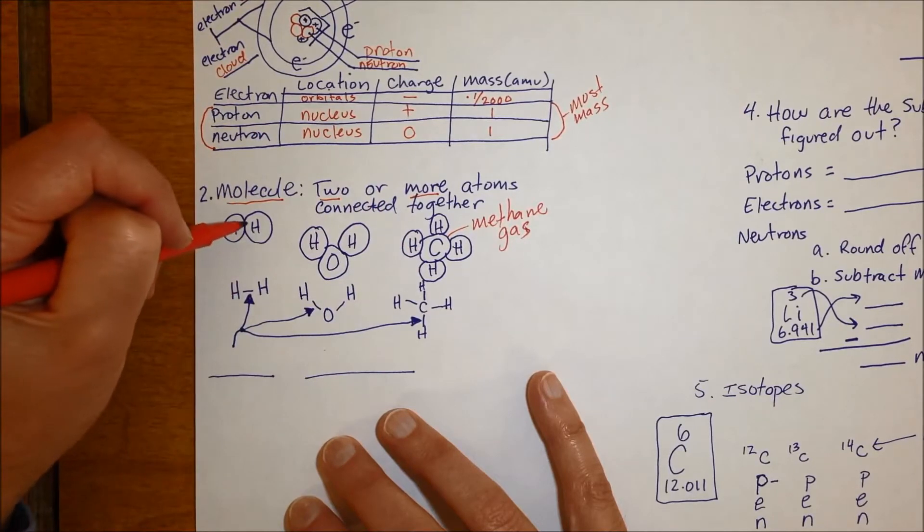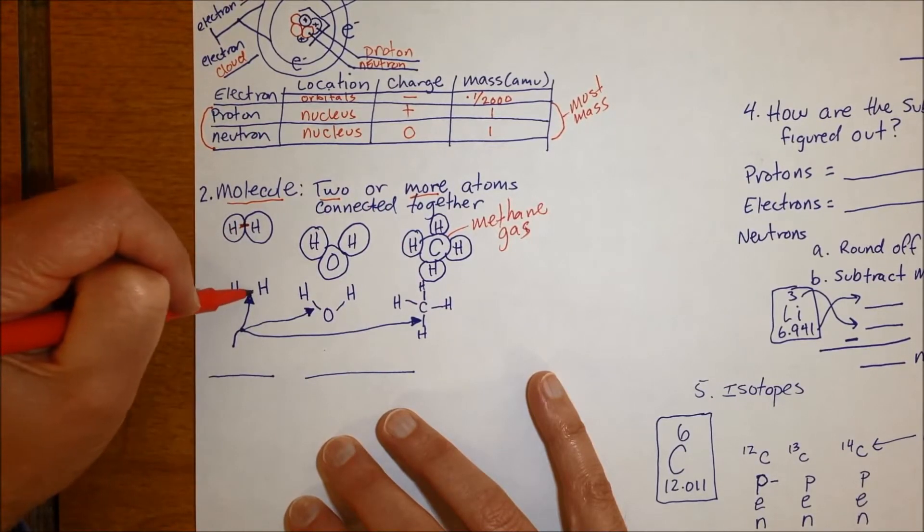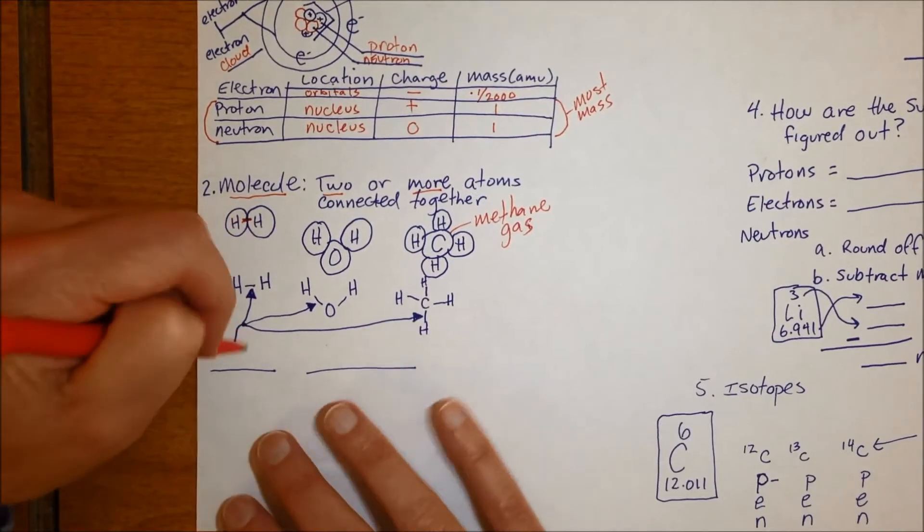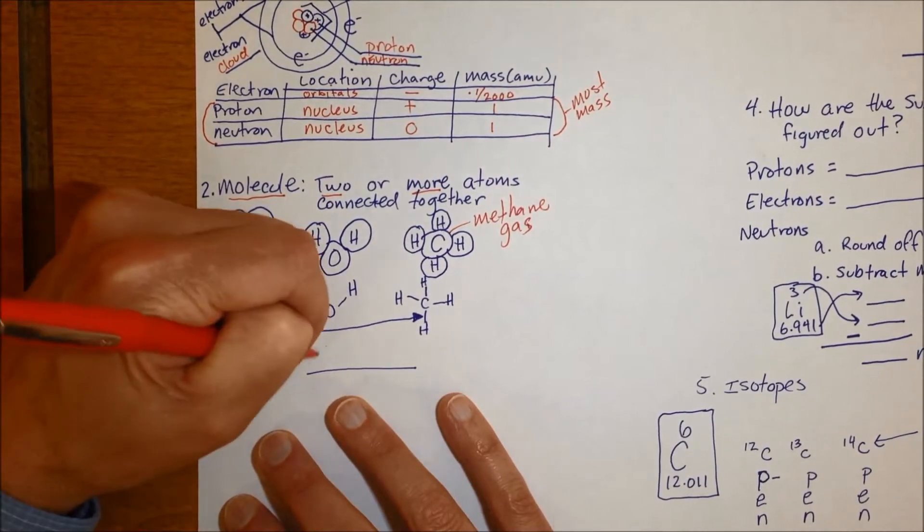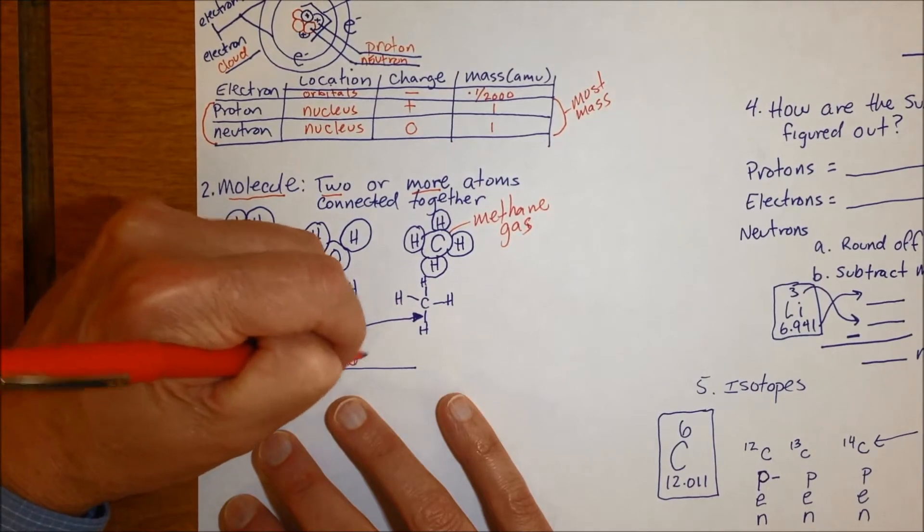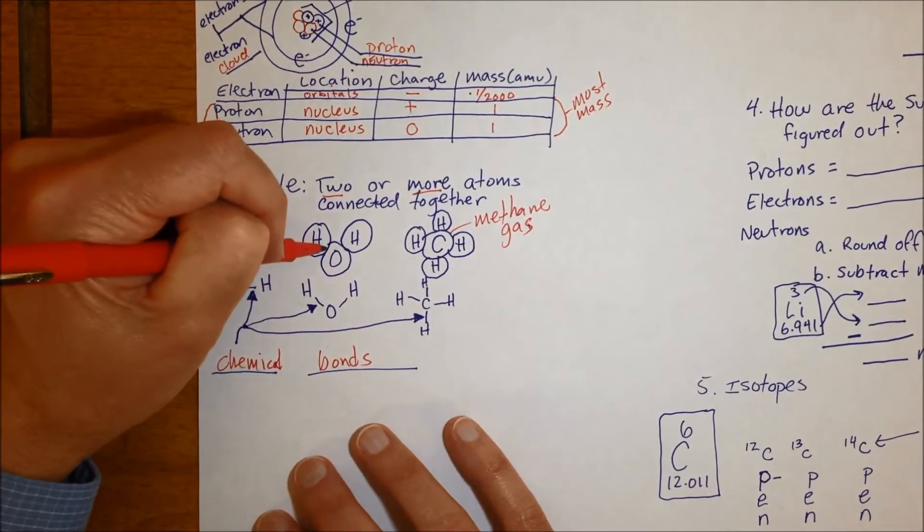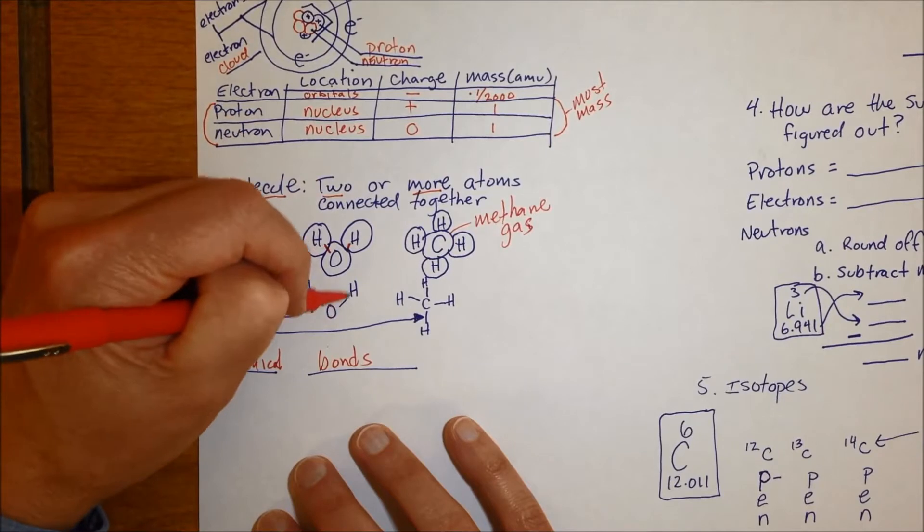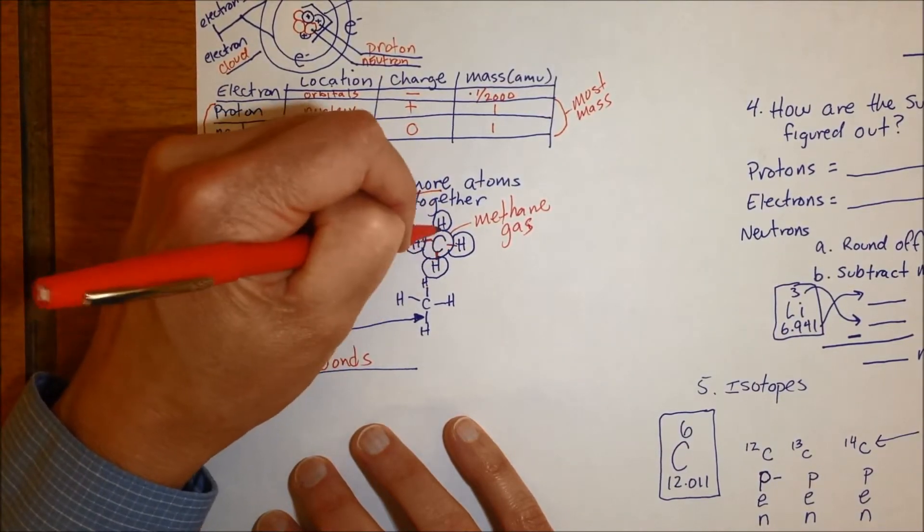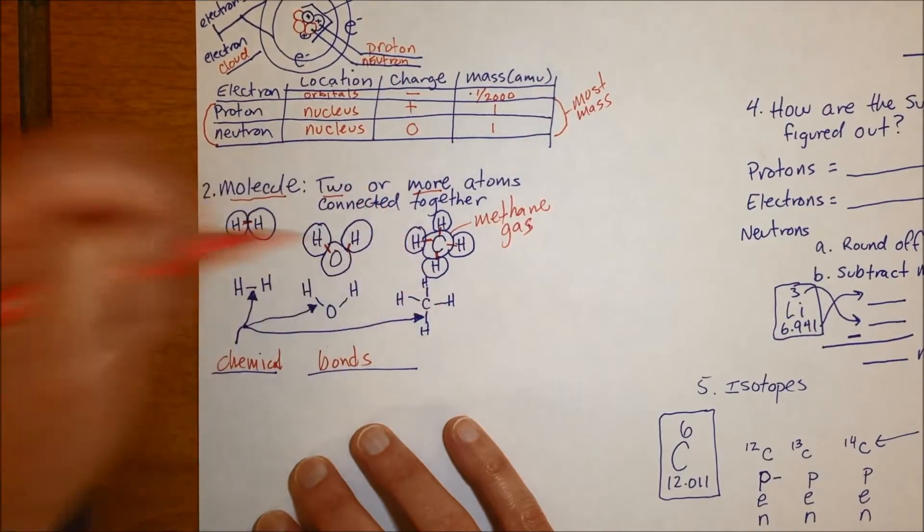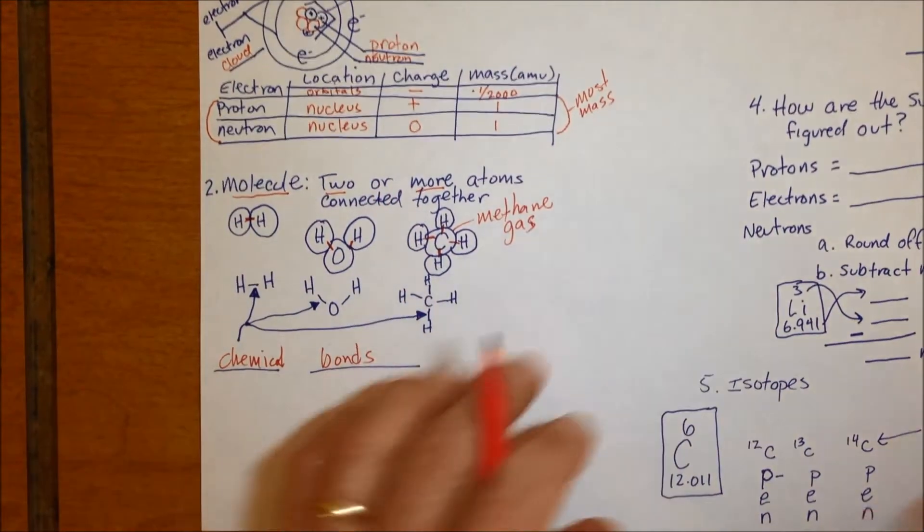We usually don't draw molecules like this because it takes so much time with all the circles. We do simplified versions, so the connection between the two we draw as a line. And that connection has a name, they're called chemical bonds. So instead of drawing the circles, we represent a water molecule like this or the shape of a methane molecule.